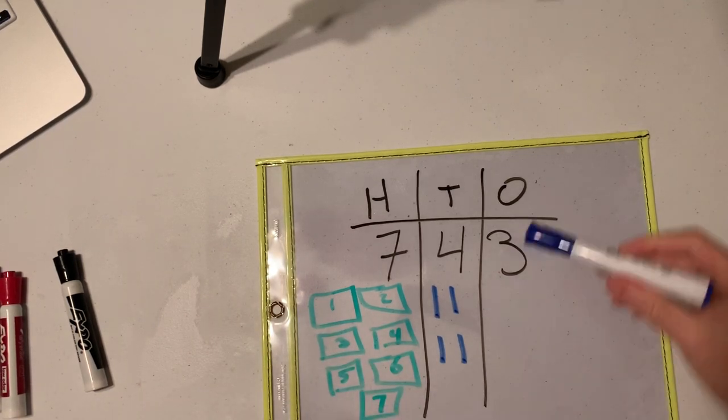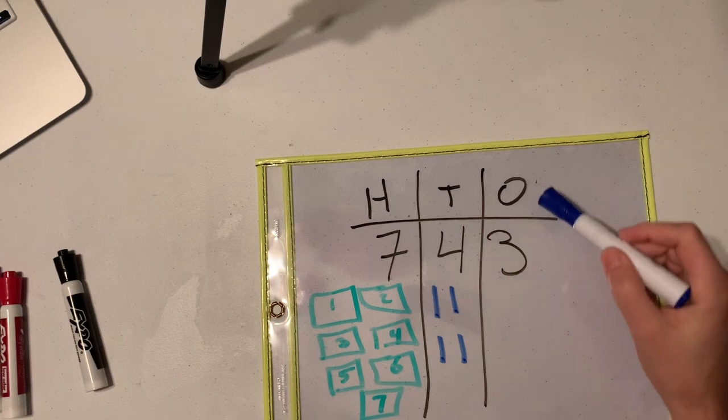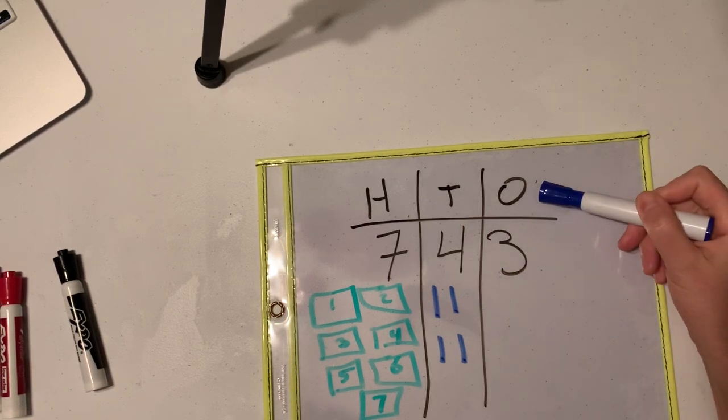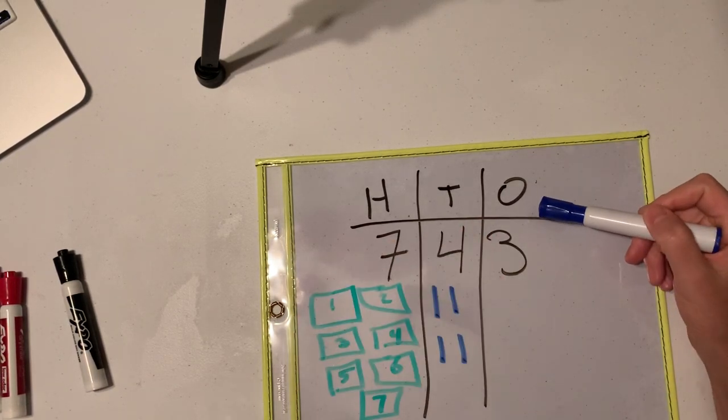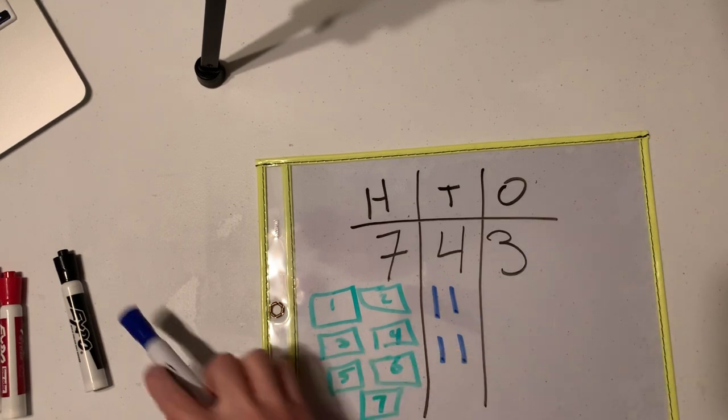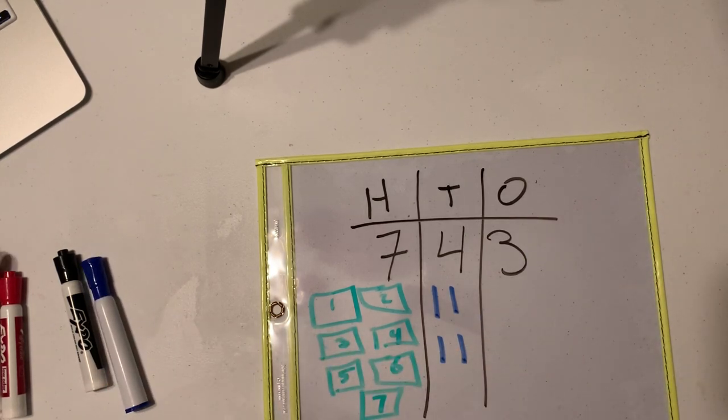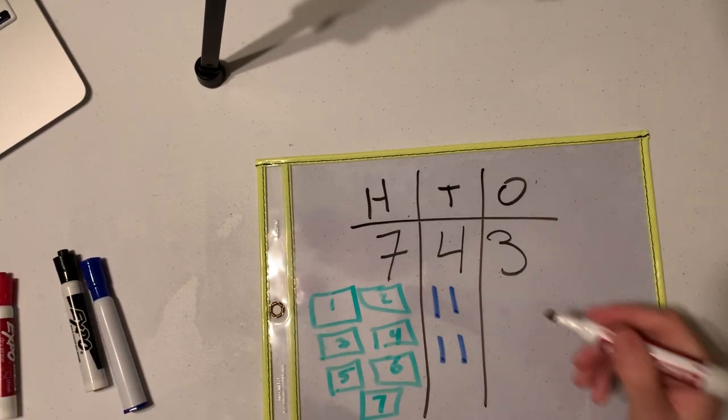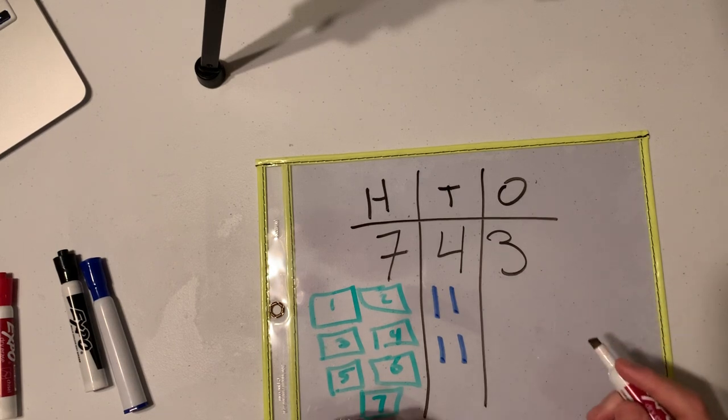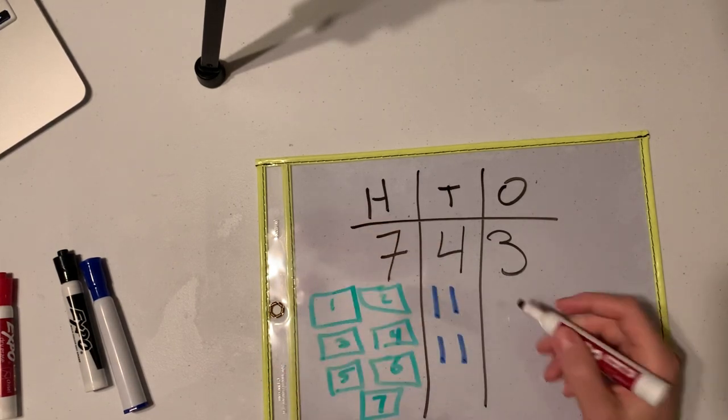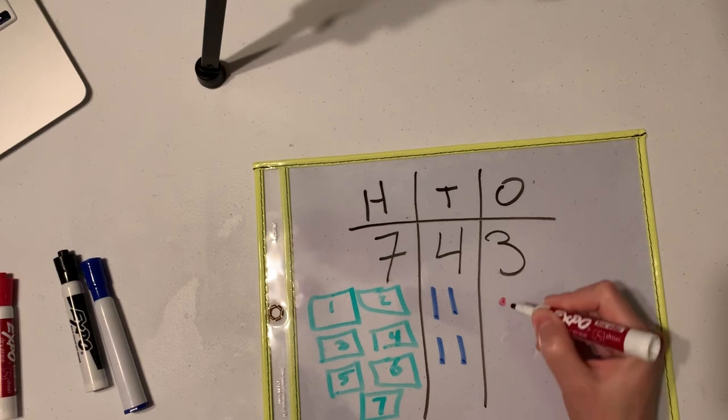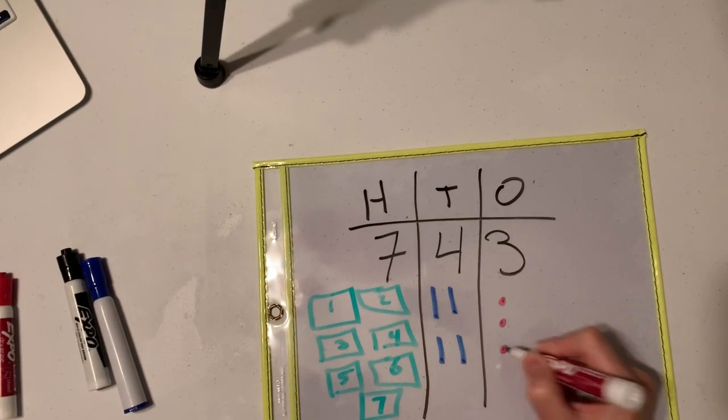Now, how many ones do we have? This is easy. The ones place just shows the value as-is. So we have three. I'm going to draw three ones. And the ones, we draw them just doing a little dot like this. One, two, three.